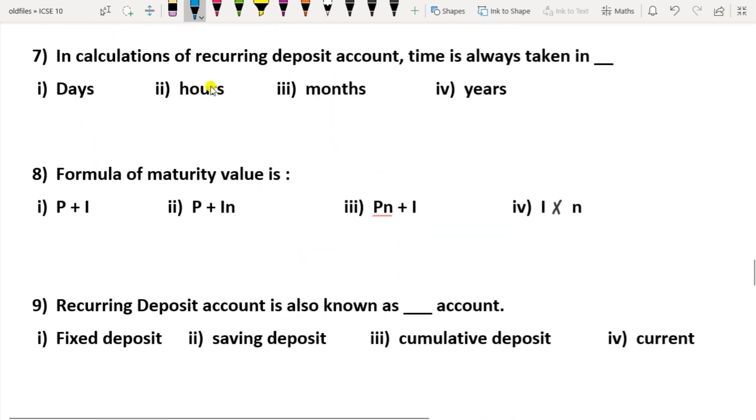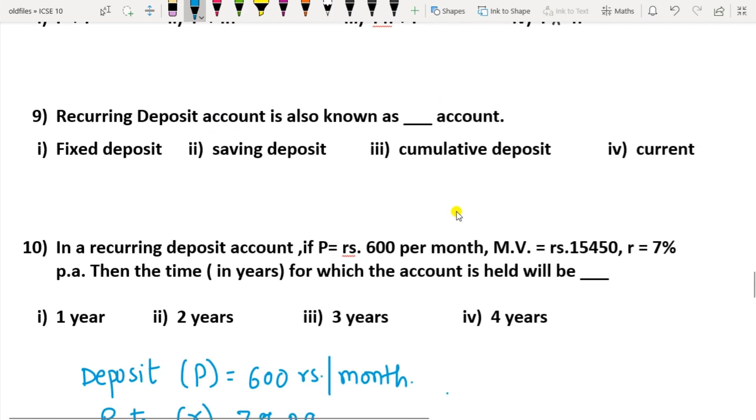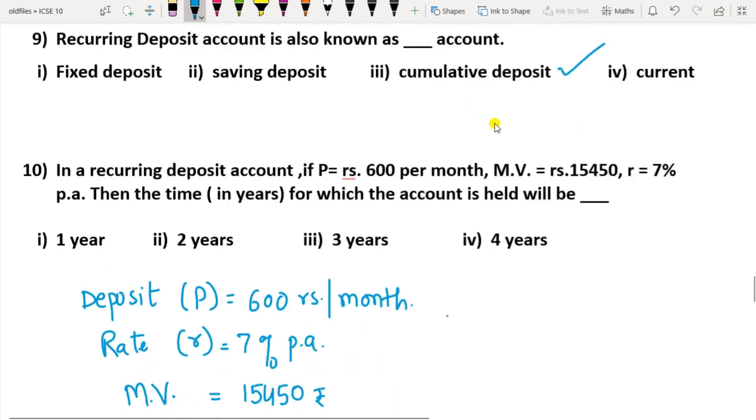In calculations of recurring deposit account, time is always taken in months. Formula of maturity value is Pn + I. Recurring deposit account is also known as - fixed, savings, cumulative, or current. So option 3, cumulative deposit account, is the correct option.